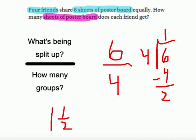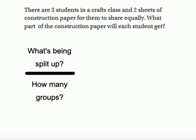Let's try another one here. There are three students in a craft class and two sheets of construction paper for them to share equally. What part of the construction paper will each student get? So once again, we need to identify what's going on here. So if we take a look at this problem, it looks like there's three students in the class and they're going to share two sheets of construction paper.